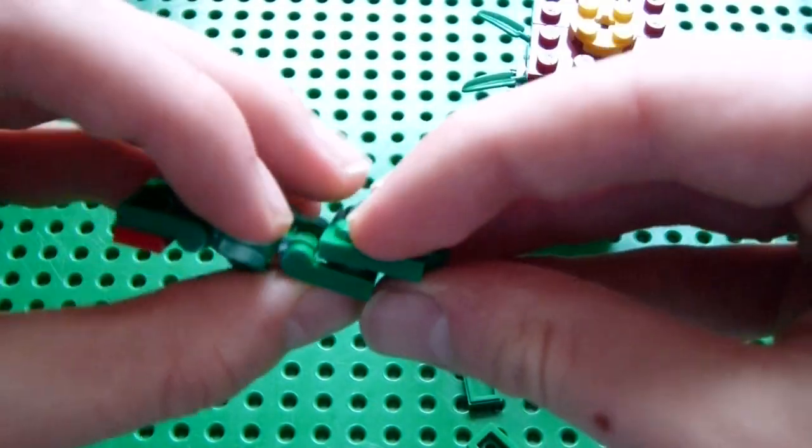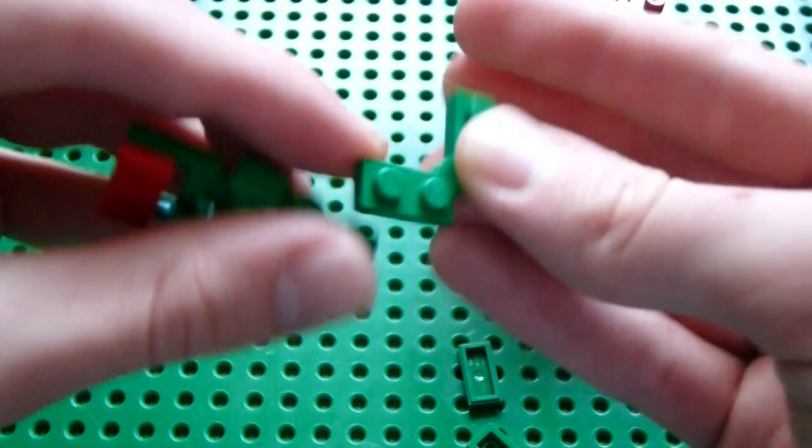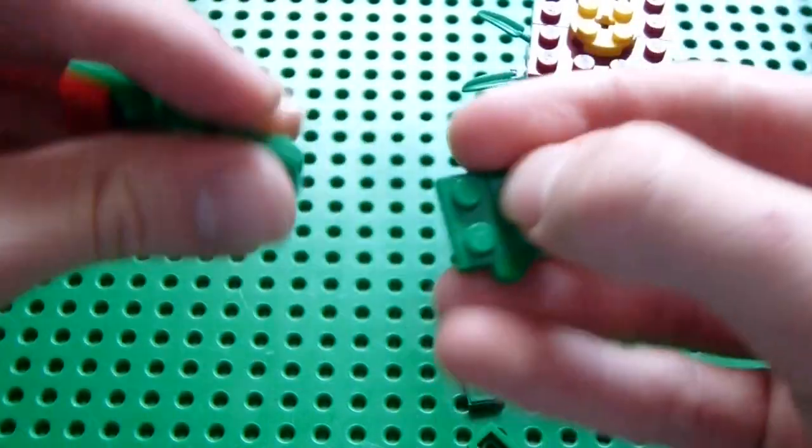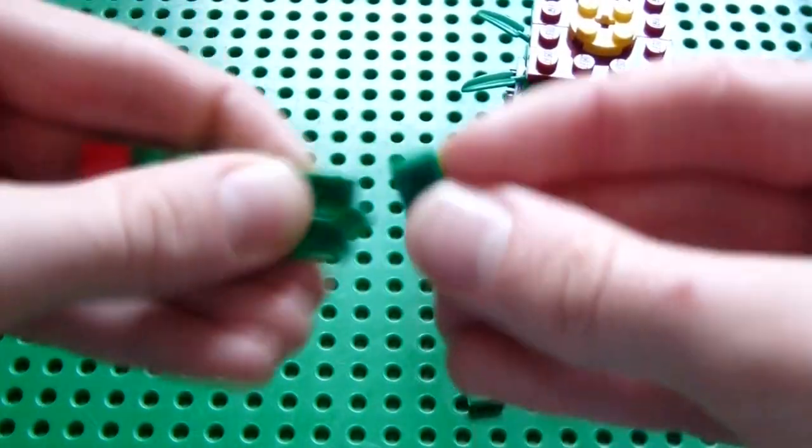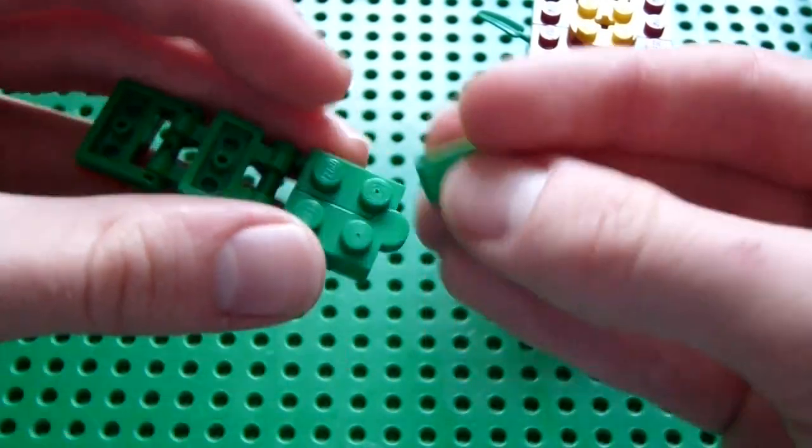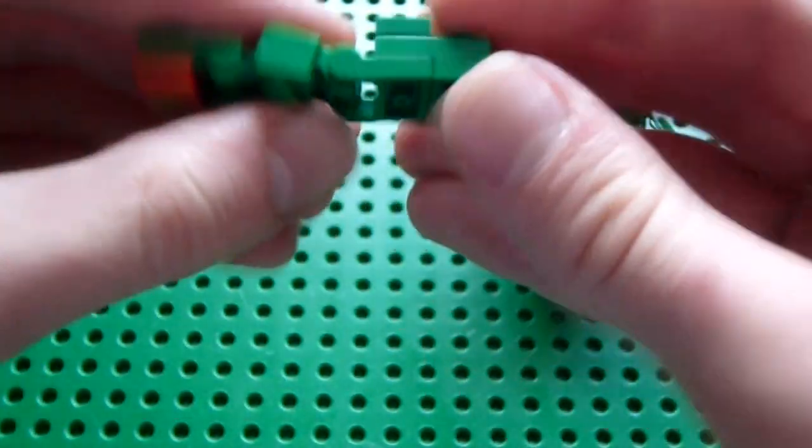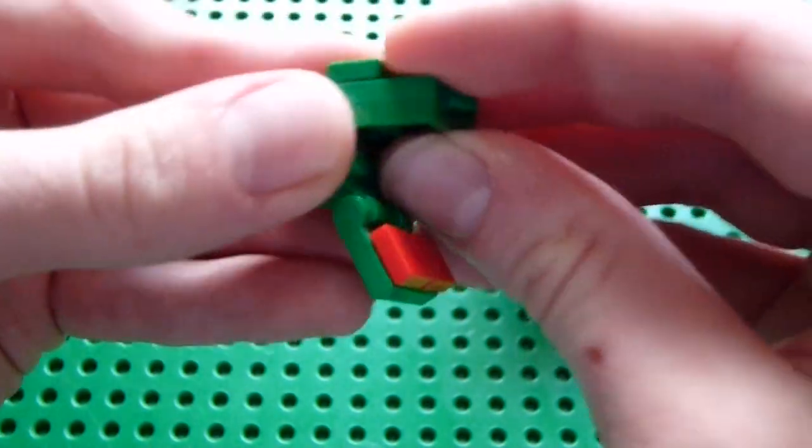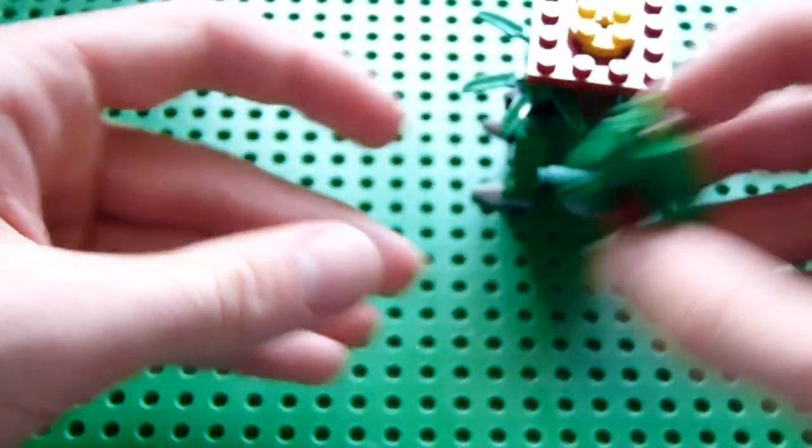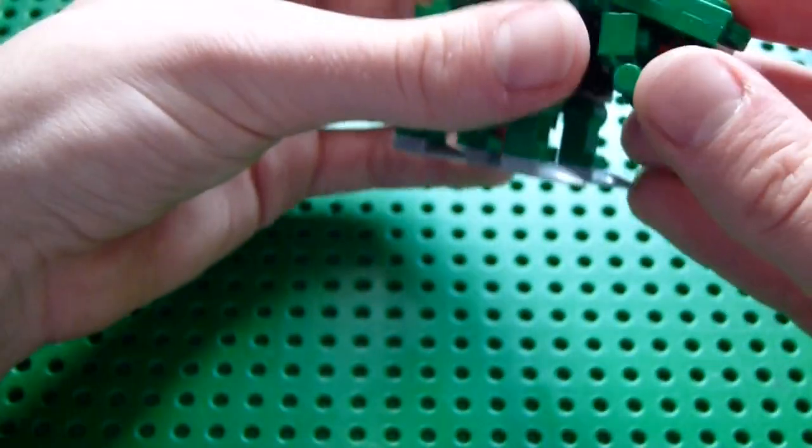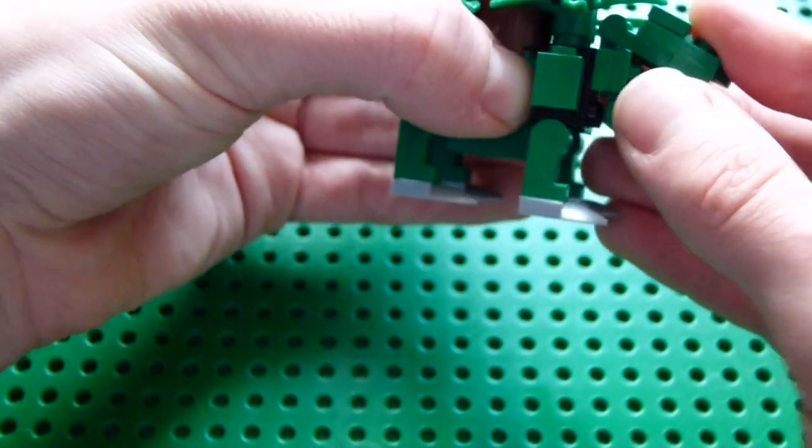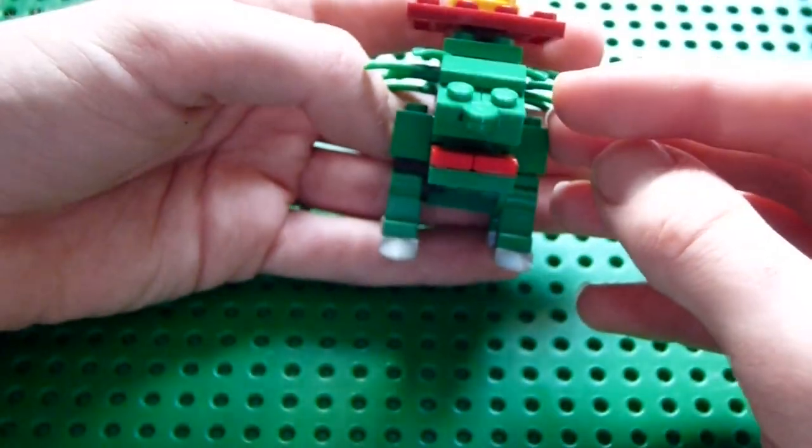And on this side, put one of these little hinges right here. A 2x1 green here. And then a 2x1 green smooth plate here. And bend it. And you've got a general mouth. And then you place it on here. And ta-da! Venusaur.